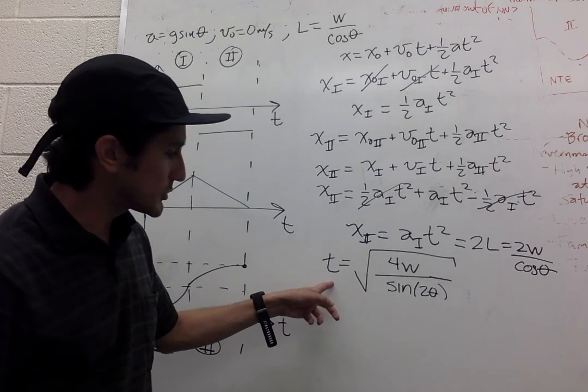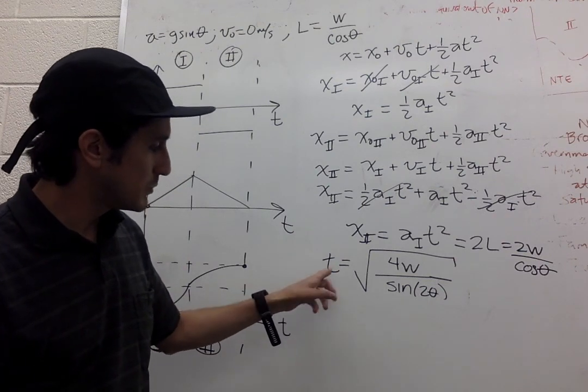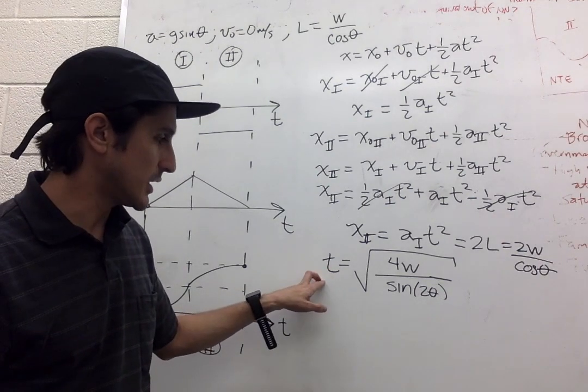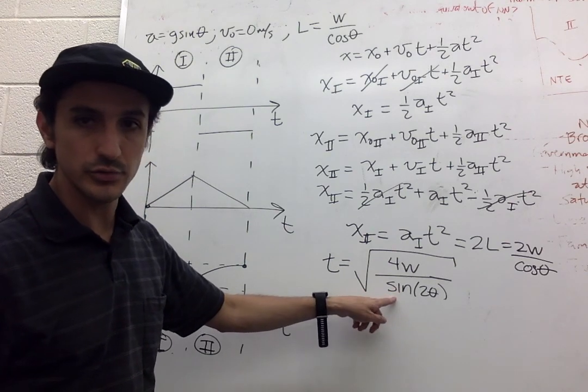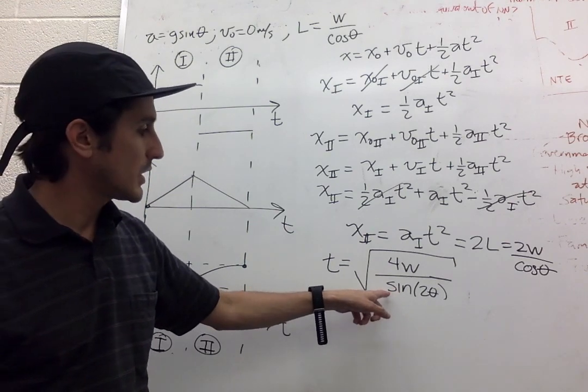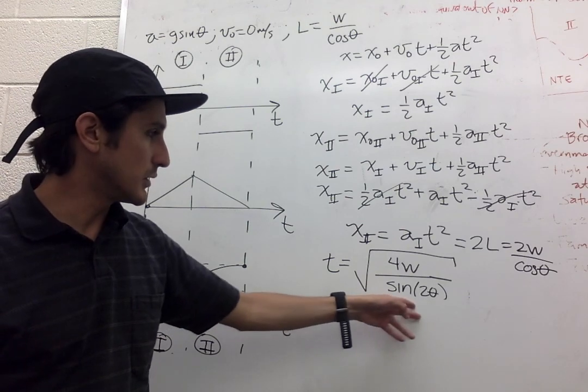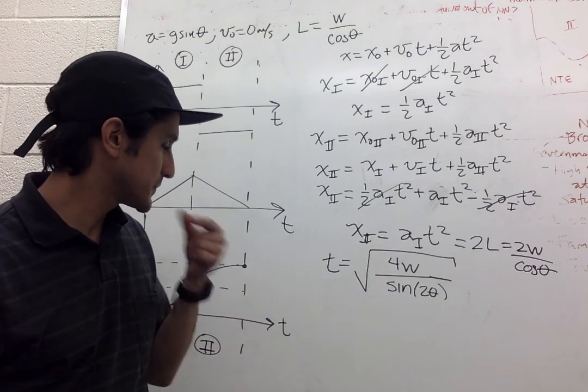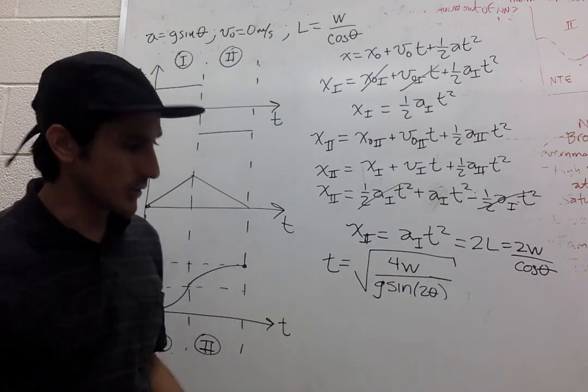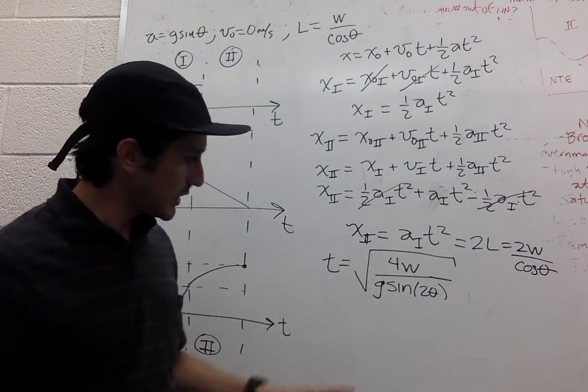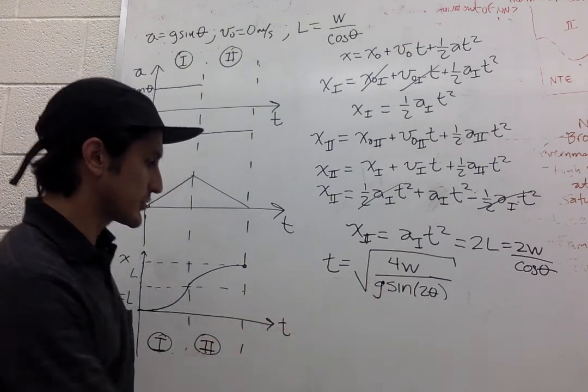So if we want to minimize the time, the denominator over here has to be maximum. And what is the maximum value of 2 theta, or the maximum value of sine?